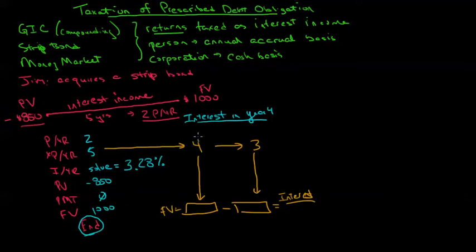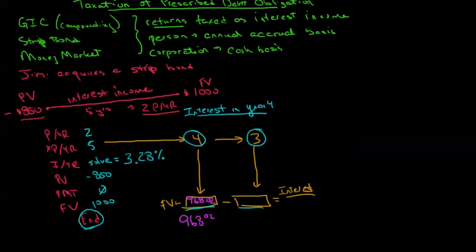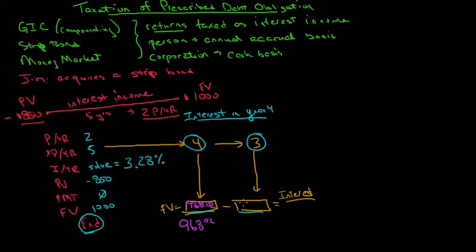So it's real simple, just re-input your times P/YR make that into a four, and then re-input your times P/YR again make it into a three, solving for future value at each step along the way. We'll solve for that first future value and we'll get $968.02. Then we're going to solve the same thing for year three, which will be $937.06. The difference between those two amounts is the answer to this question, how much interest is there in year four? We can see then this is $30.96, which is a fairly easy way to solve what could otherwise be a very complex problem.